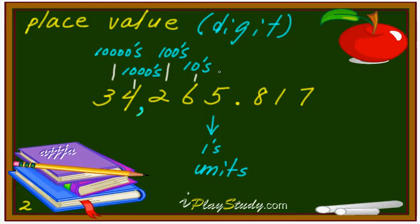That's right. So the one's digit — I can write again right here on the top: one's digit. Or sometimes they equal units digit, remember? Also this one is a point — a decimal point. We read this one like a decimal point.